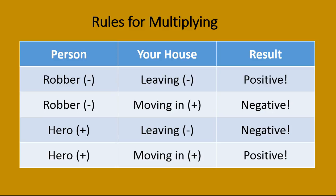I want to give you a quick analogy for a way to remember rules for multiplying. Think about a person being either a robber or a hero, and your house — the robber or hero can do one of two things. They can either come to your house, which is like adding, like a positive, or they can leave your house, which is like a minus, like one less person in your house.